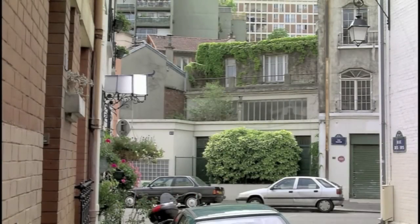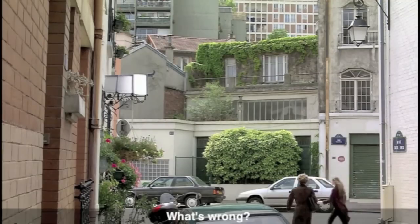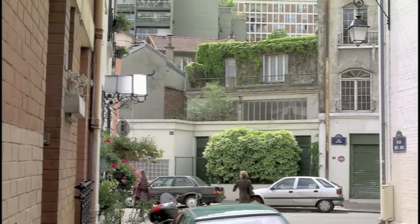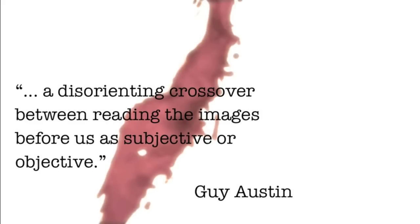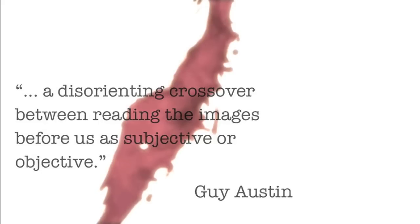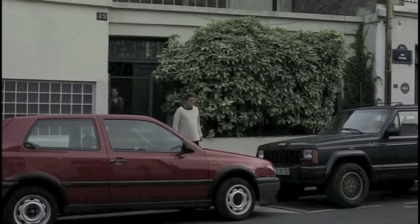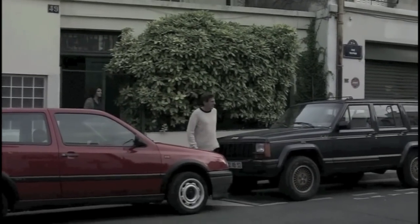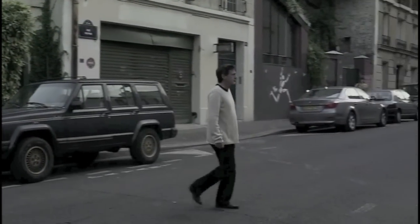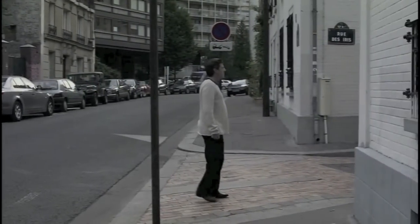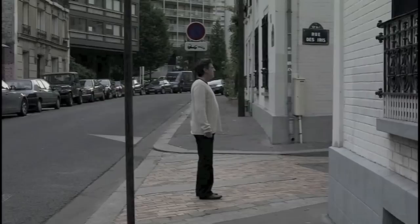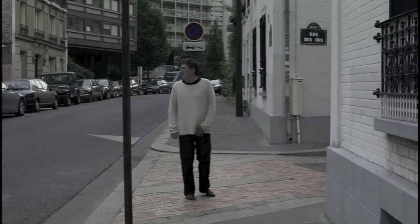Back to the opening shot: if at first you thought this was the film setting out its fictional location for you, you will have been wrong-footed by the revelation that the shot is a material piece of that fictional world — a shot taken not by Haneke, but by a character in the story. As Guy Austin puts it, he creates a disorienting crossover between reading the images before us as subjective or objective. He even twists the knife on his viewers because we do get a kind of reverse shot that isn't part of the video, but it's not from the angle we want.